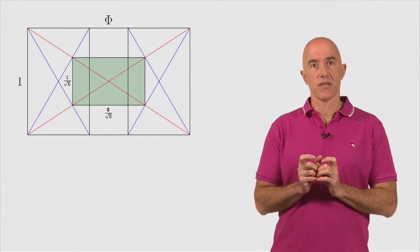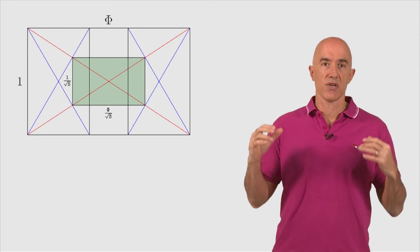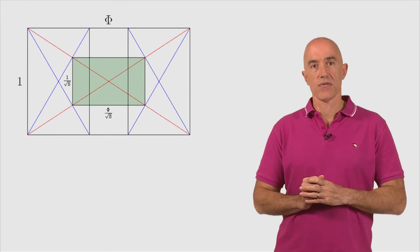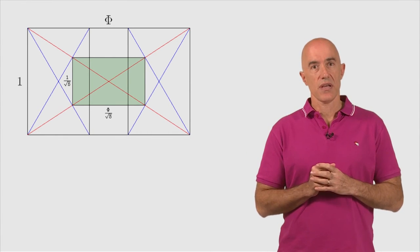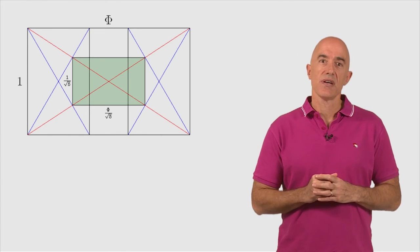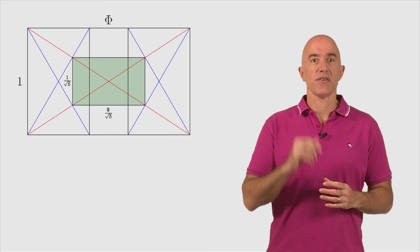So the length of the rectangle is square root of five shorter than the length of the initial golden rectangle that we start with. I think this is really cool. And I leave it to you to show that this is in fact true. I'll see you next time.